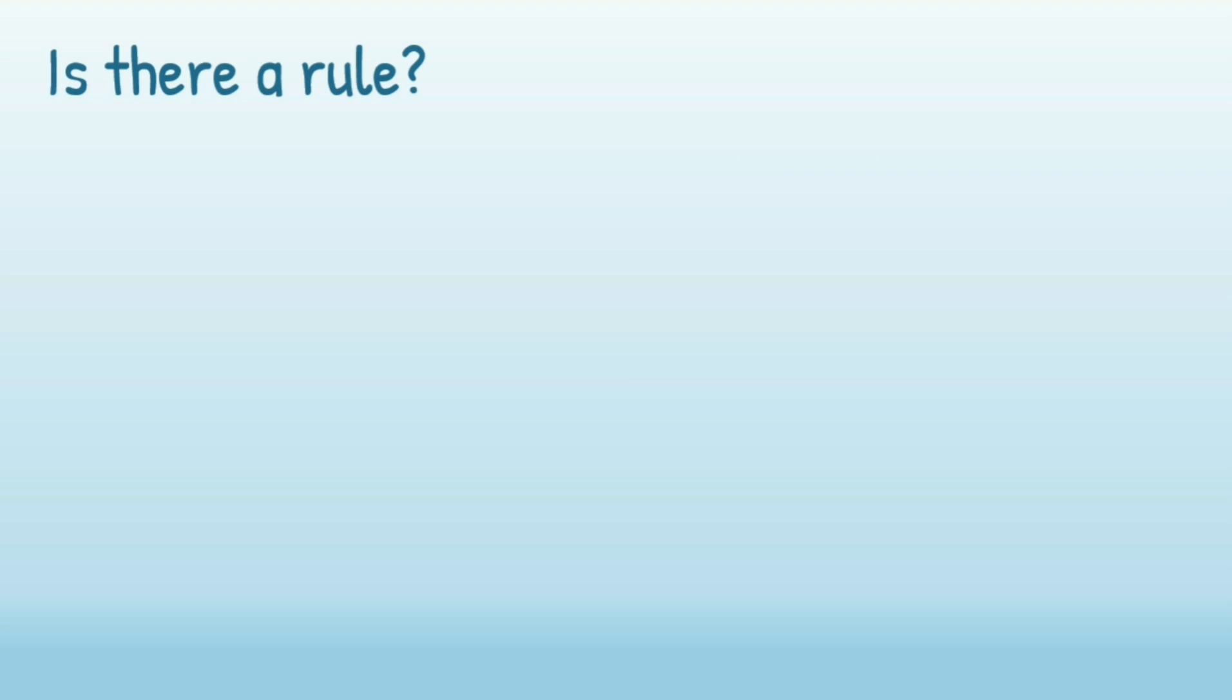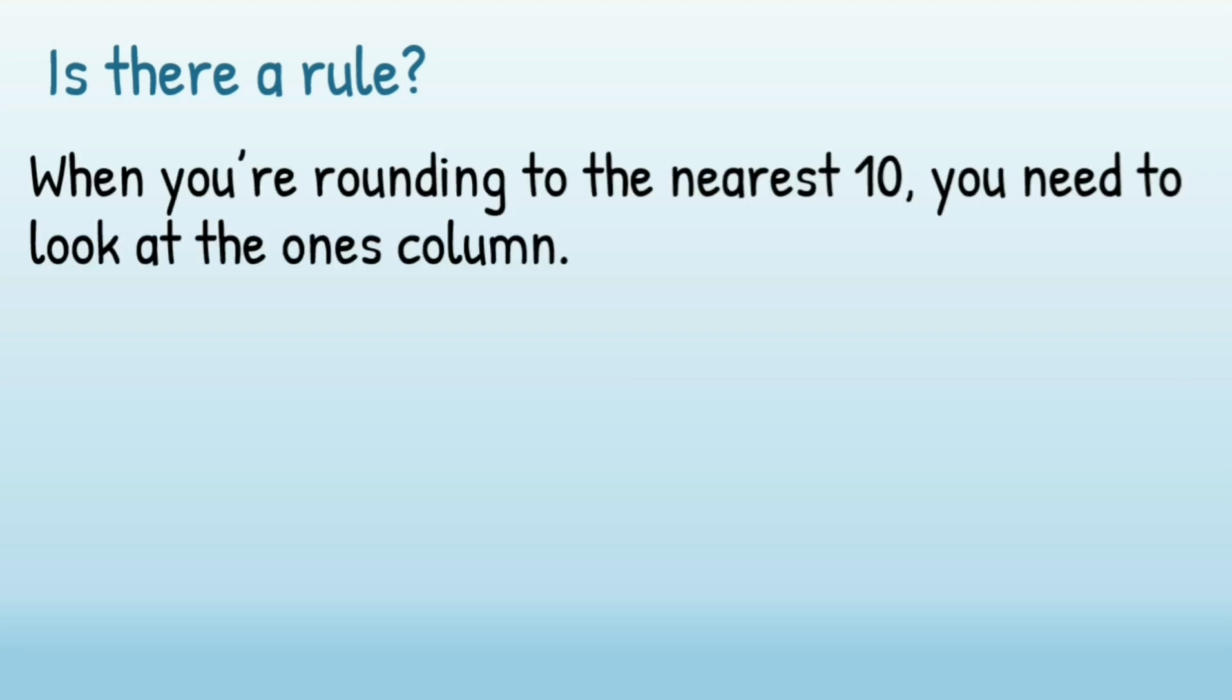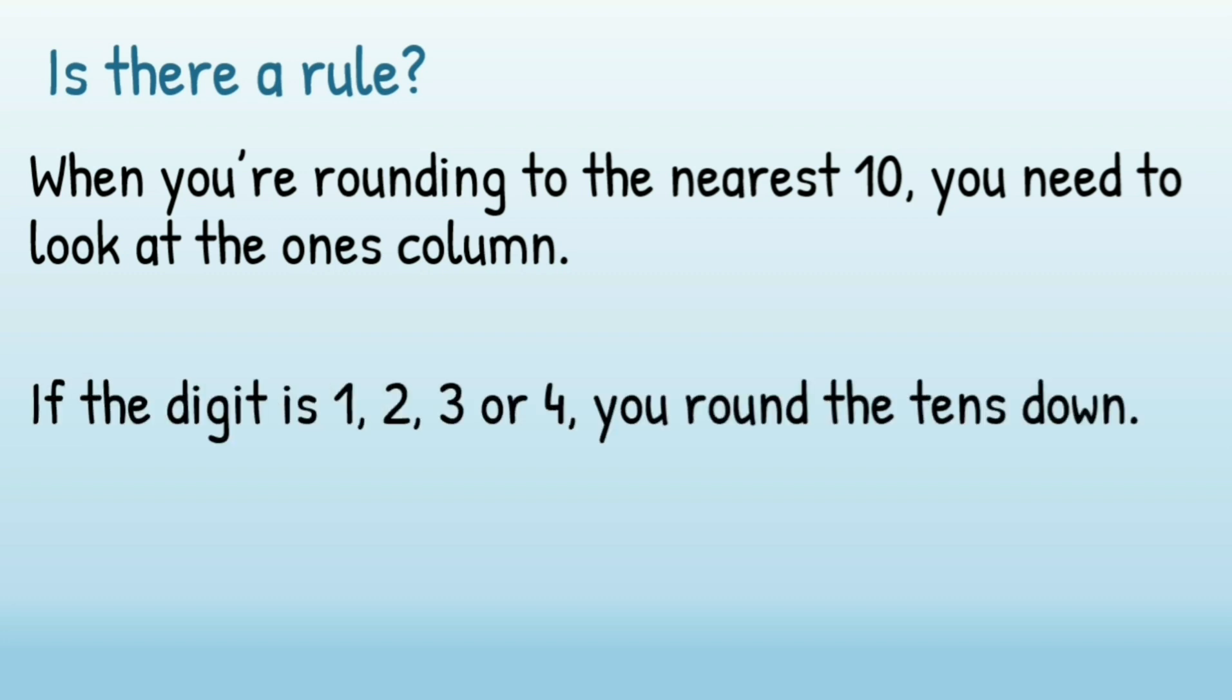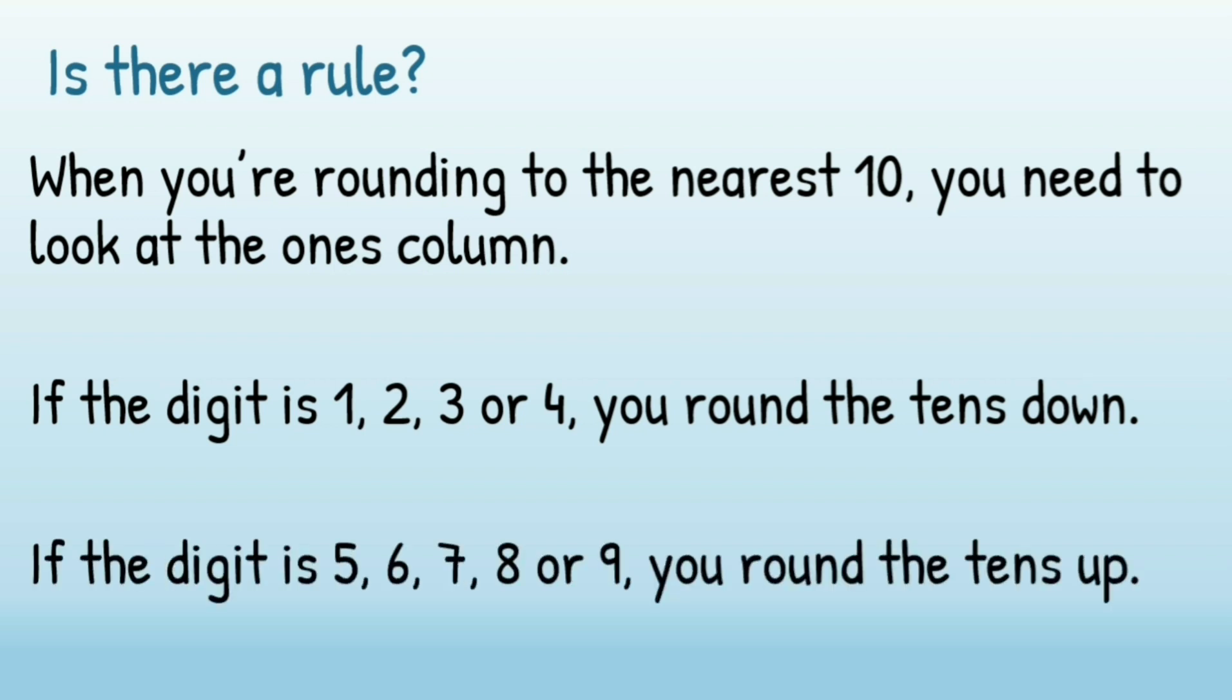So is there a rule? Well, yes, it looks like there is. When you're rounding to the nearest 10, you need to look at the ones. If the digit is 1, 2, 3, or 4, you round the 10s down. If the digit is 5, 6, 7, 8, or 9, you round the 10s up.